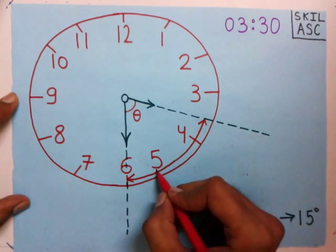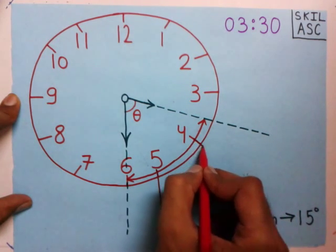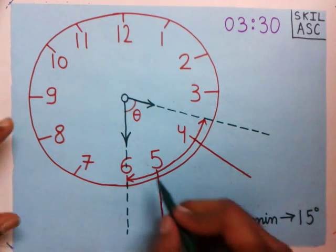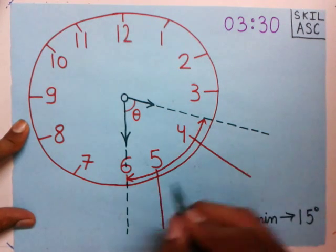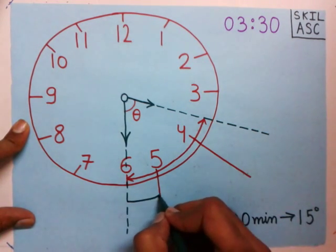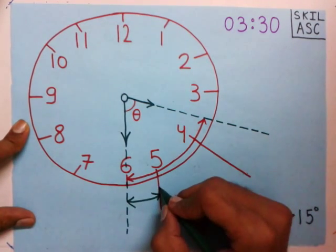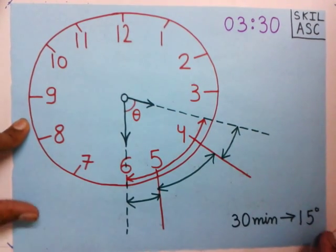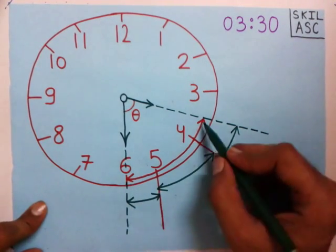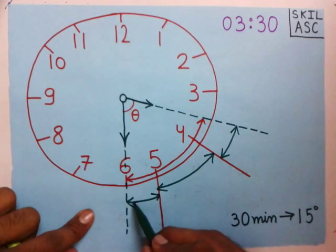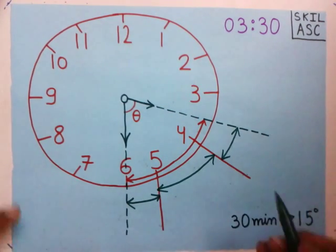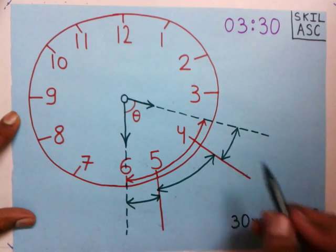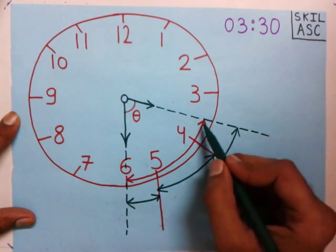We again extend these points. This complete angle can be divided into 3 parts — this angle, this angle, and this angle. So this complete angle is made up of 3 angles. To find the total angle, we find these 3 angles and then add them together to get the complete angle.